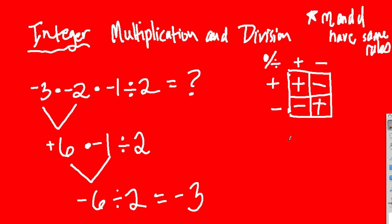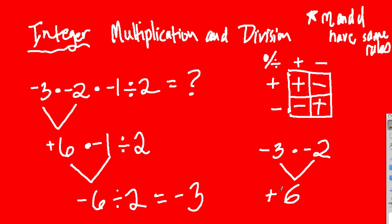Let's go back to my first step: negative three times negative two. When you're multiplying or dividing, I first pair the numbers up. Before I think about whether the result is positive or negative, I pretend both numbers are positive. So I see positive three and positive two and just multiply them — three times two is six. Then I check the chart: a negative multiplied by another negative gives us a positive, so six should be positive.